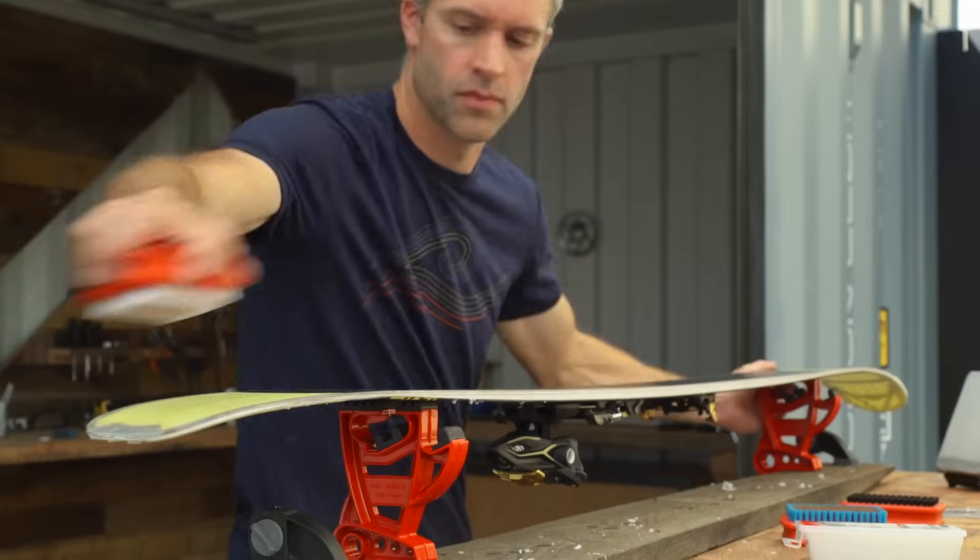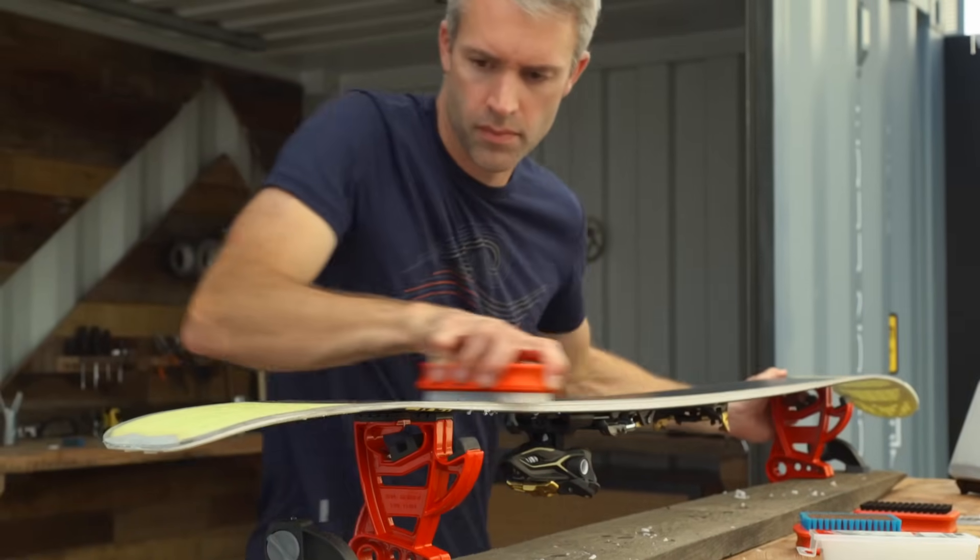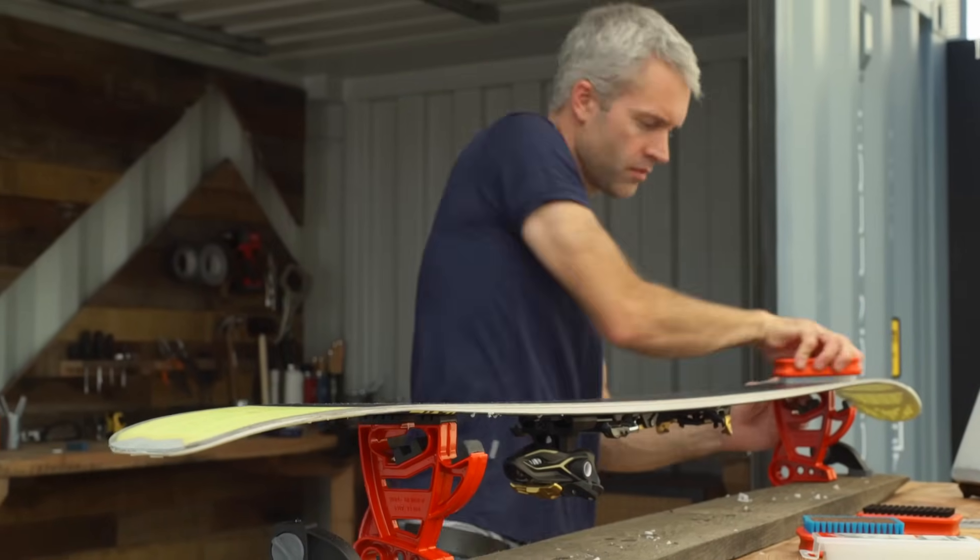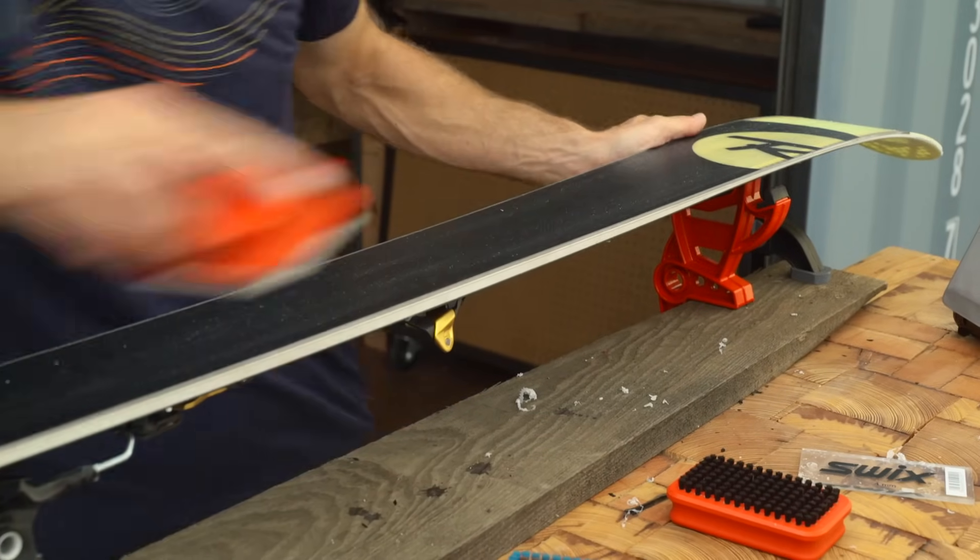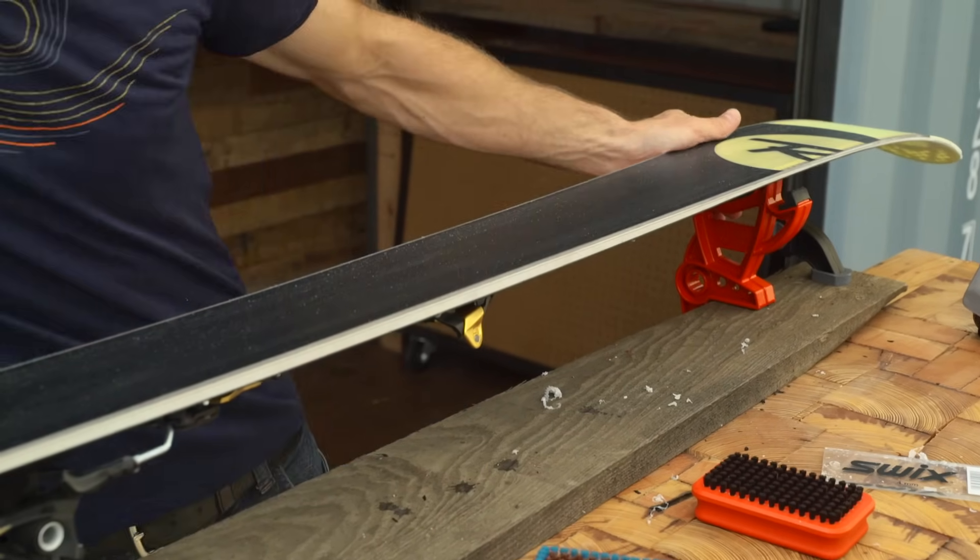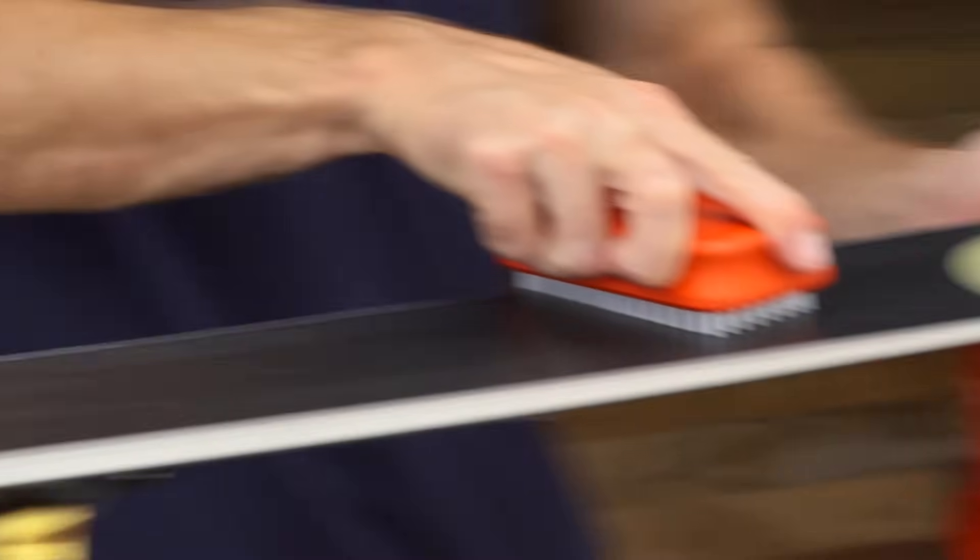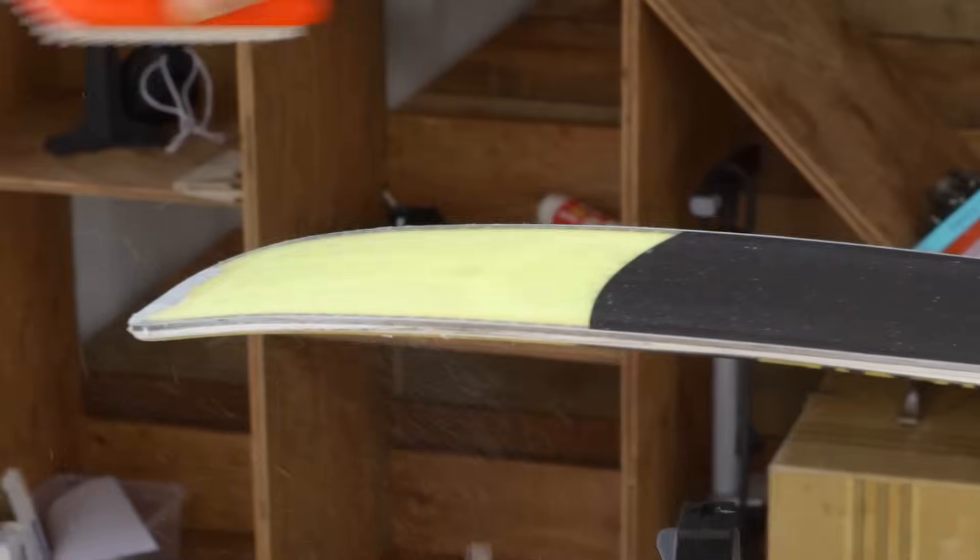Next comes the brushing. The base of the ski has tiny channels called structure which move water out as you ski. Brushing clears the wax from this structure. Make several full-length tip-to-tail passes using your nylon brush. Use good, even pressure and keep brushing until you're no longer seeing wax dust coming off.